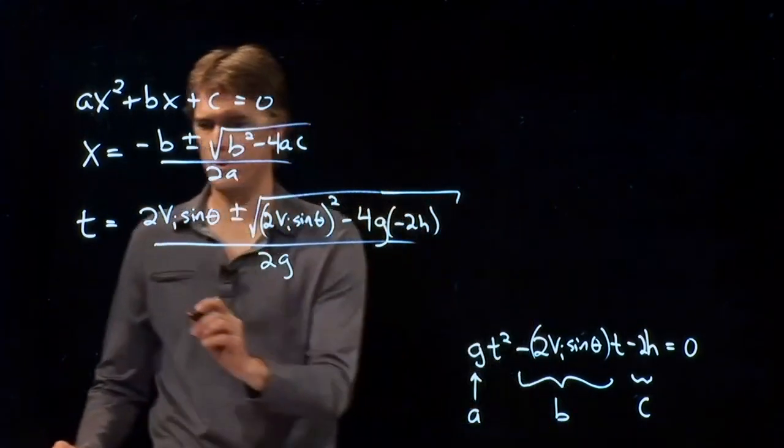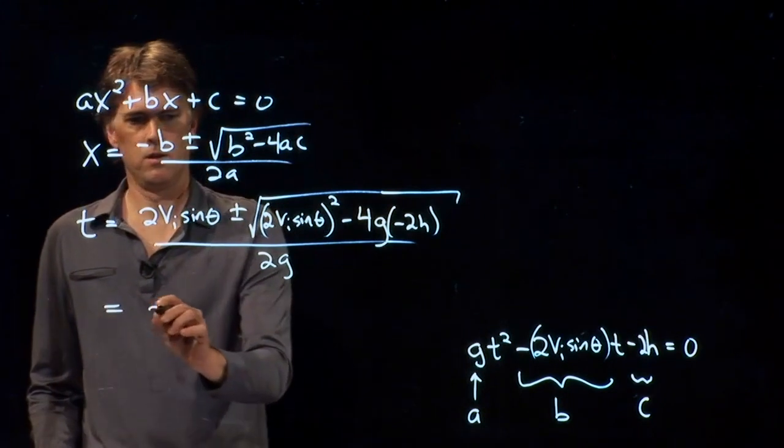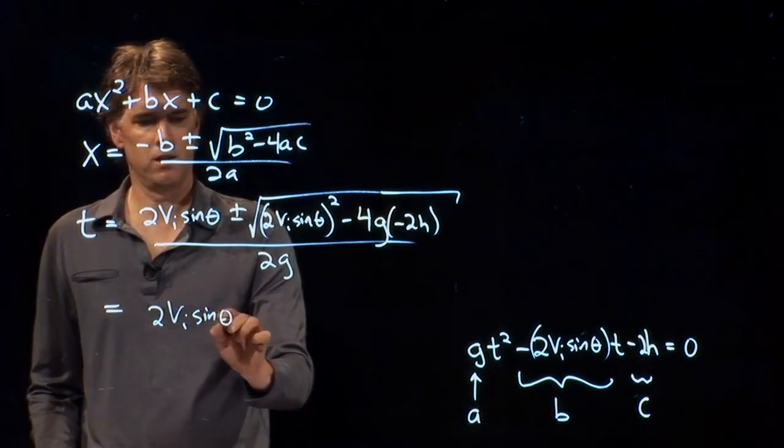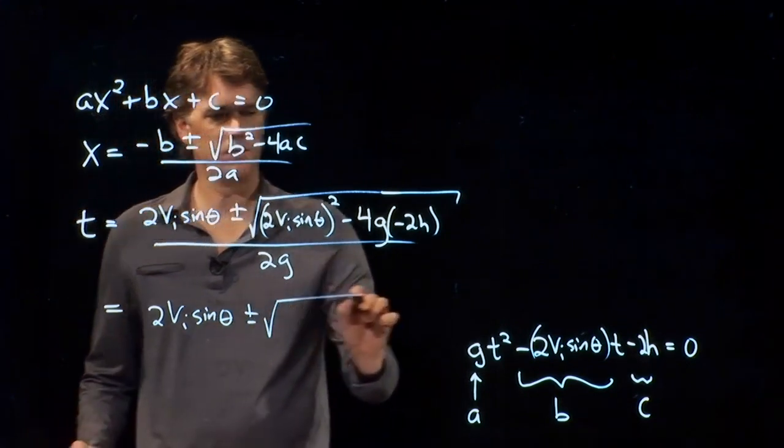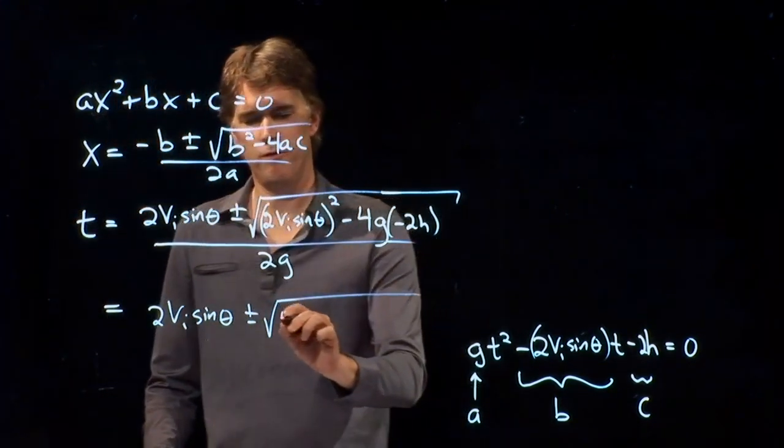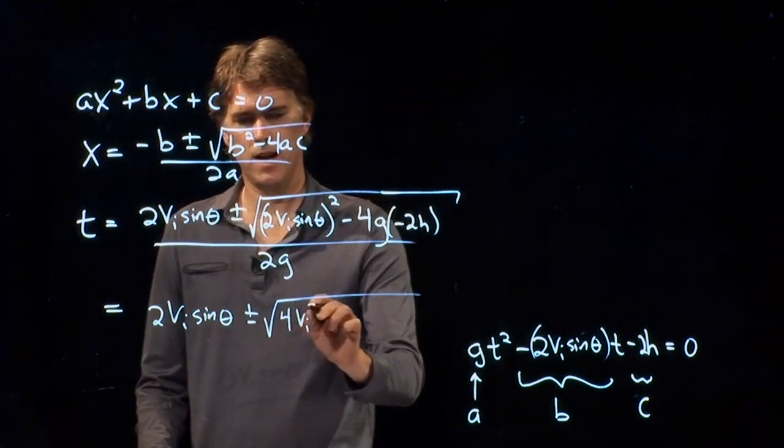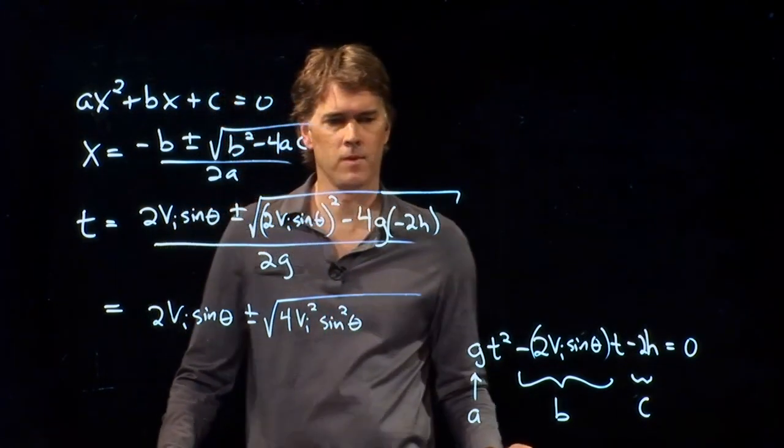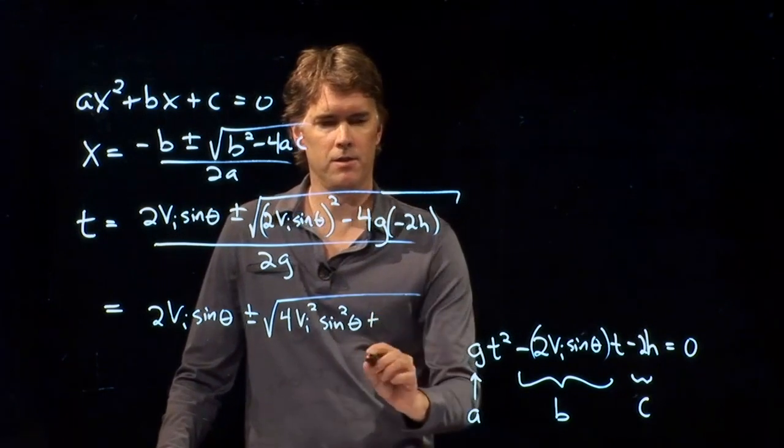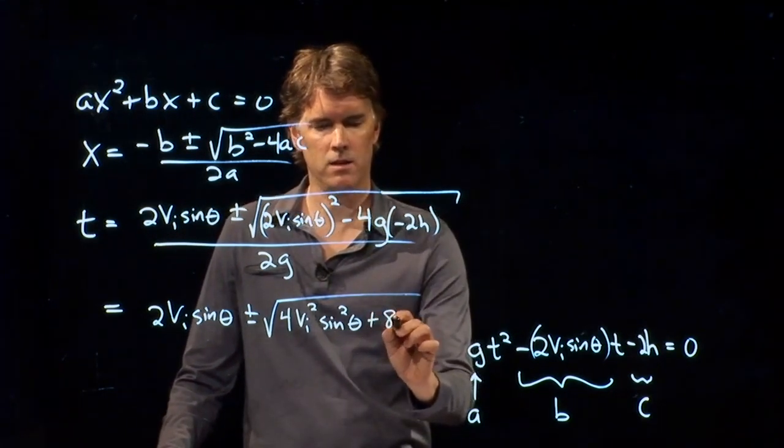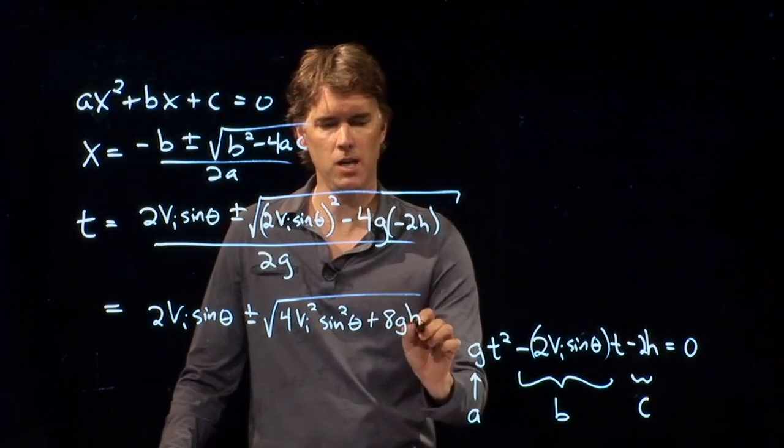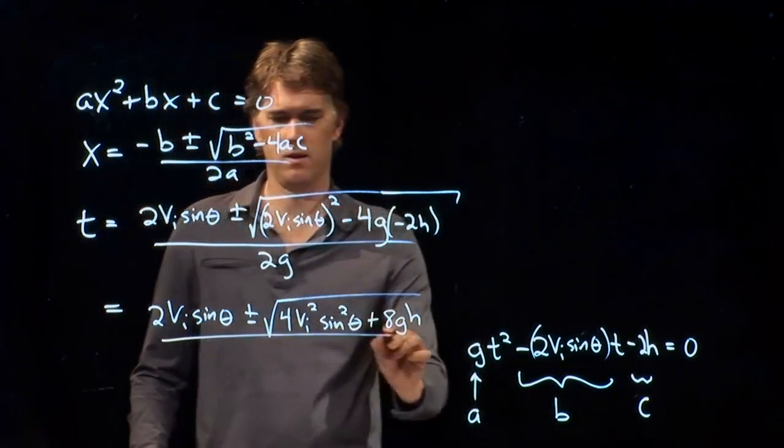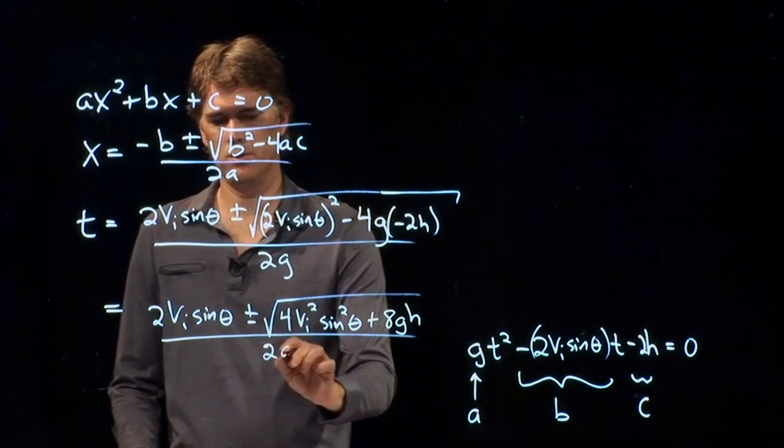So we can write T equals negative B. B is a negative number, so a negative negative becomes positive. And we get 2VI sine theta plus minus the square root of B squared, 2VI sine theta squared minus 4AC.